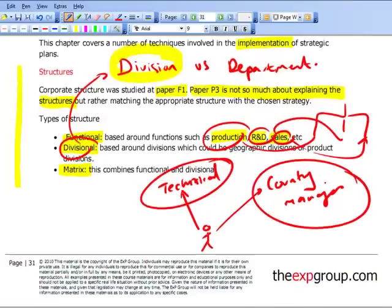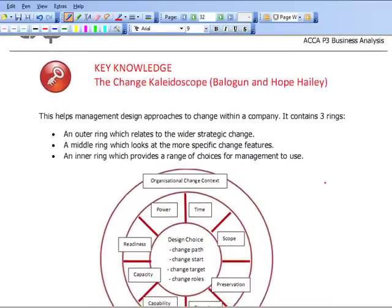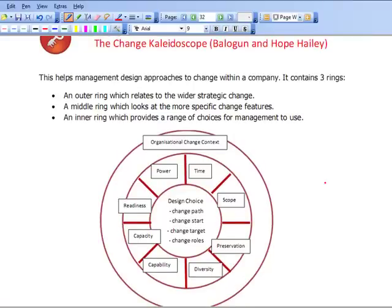At the top of page 32 is something called the Change Kaleidoscope by Balogun and Hope Hailey. Hopefully you're aware of what a kaleidoscope is. A kaleidoscope is a visual object which you look through, and as you move the outer rings, the image you see would change. That's the concept we're trying to talk about here.